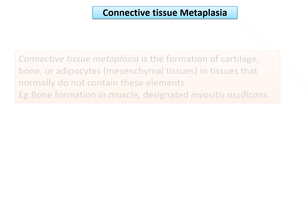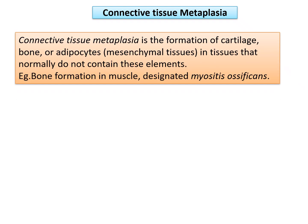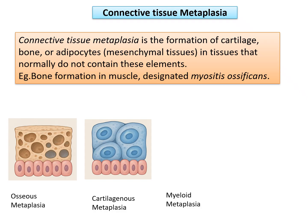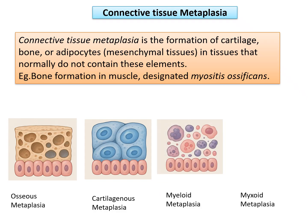Connective tissue metaplasia is the formation of cartilage, bone, or adipocytes — all mesenchymal tissues — in tissues that normally do not contain these elements. The best example is myositis ossificans, where skeletal muscle injury leads to bone formation in the injured muscle over a prolonged duration — one mesenchymal tissue transforming into another. Other examples include osseous metaplasia, cartilaginous metaplasia, myeloid metaplasia, and myxoid metaplasia.